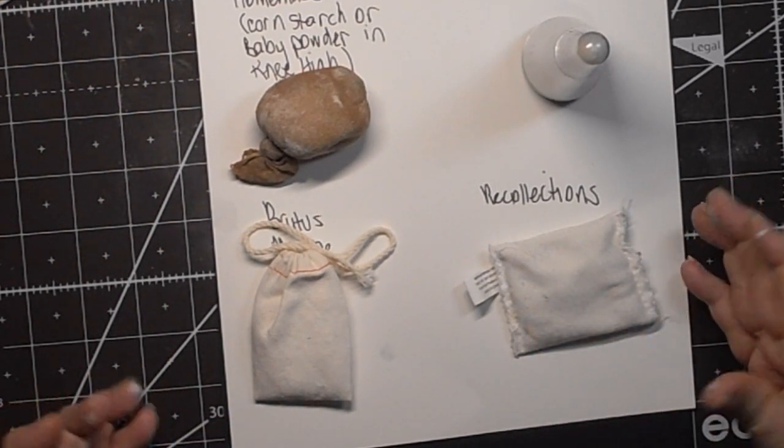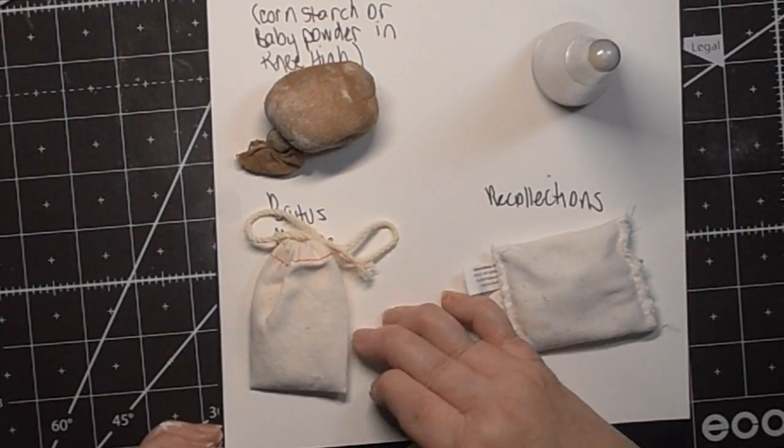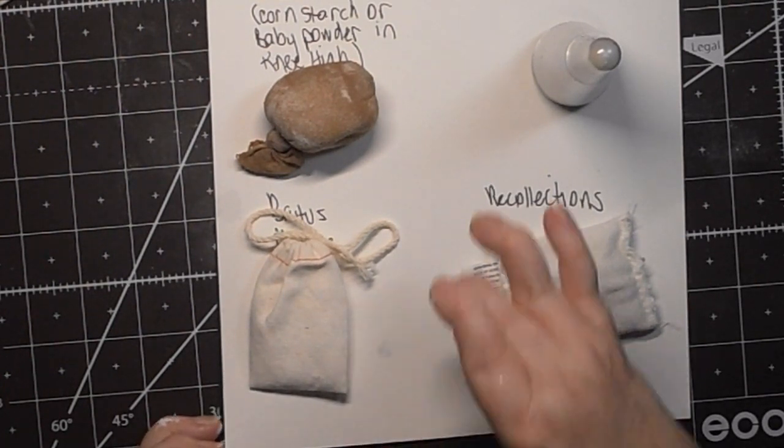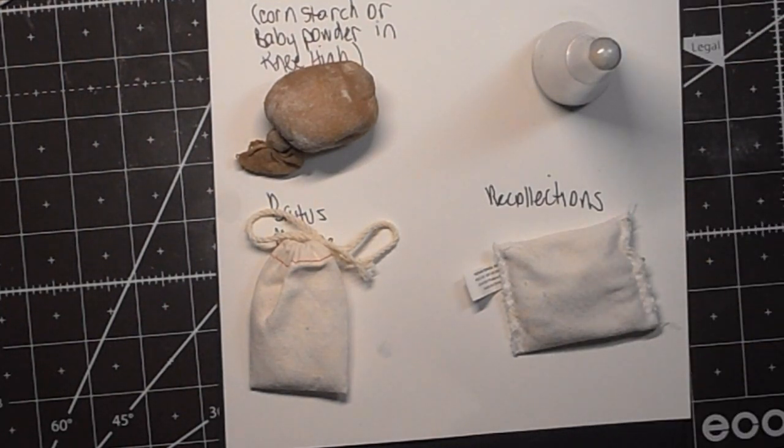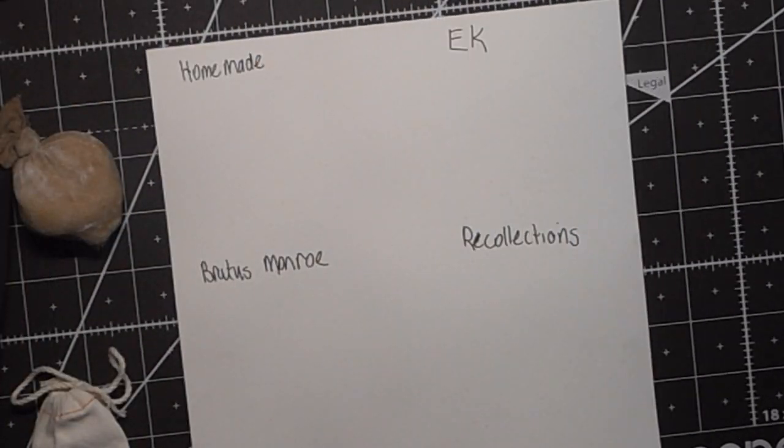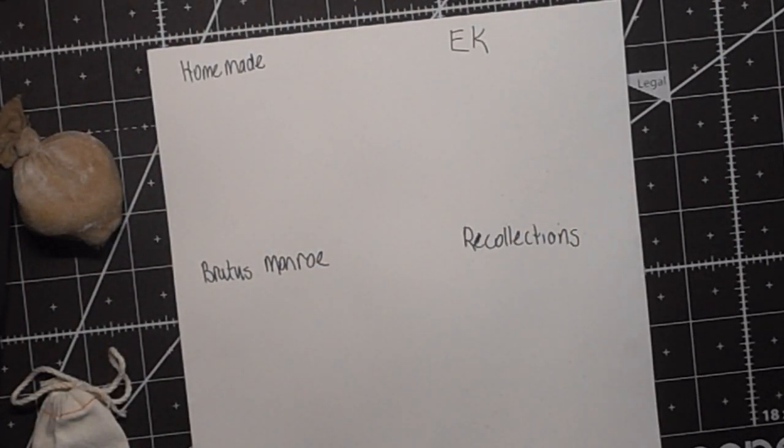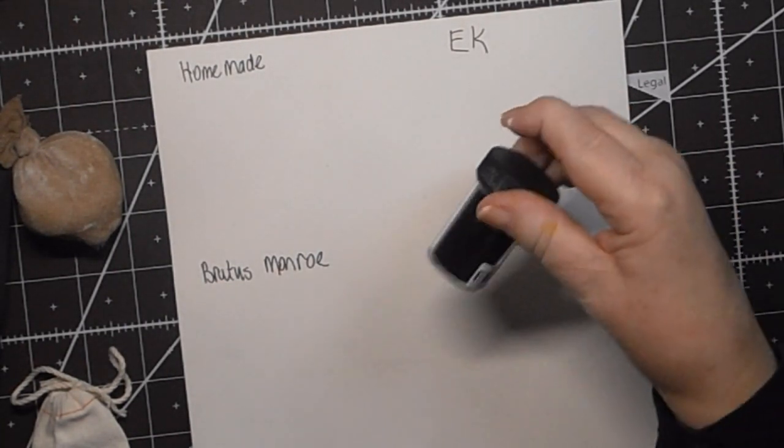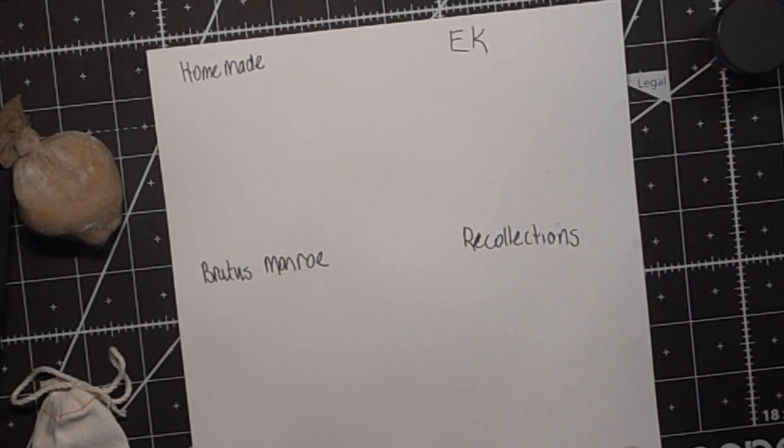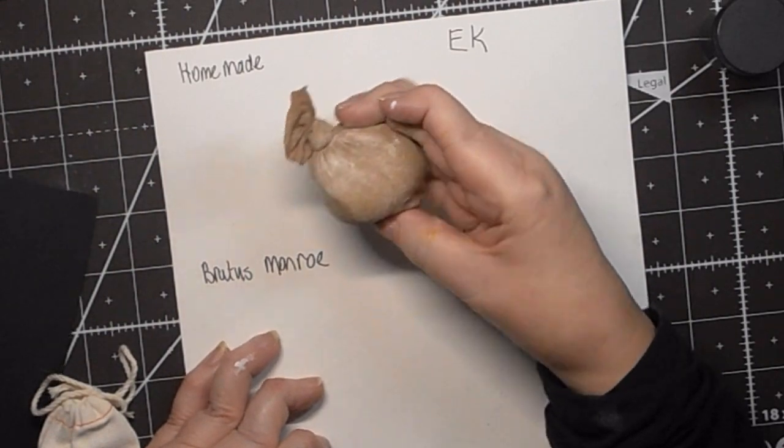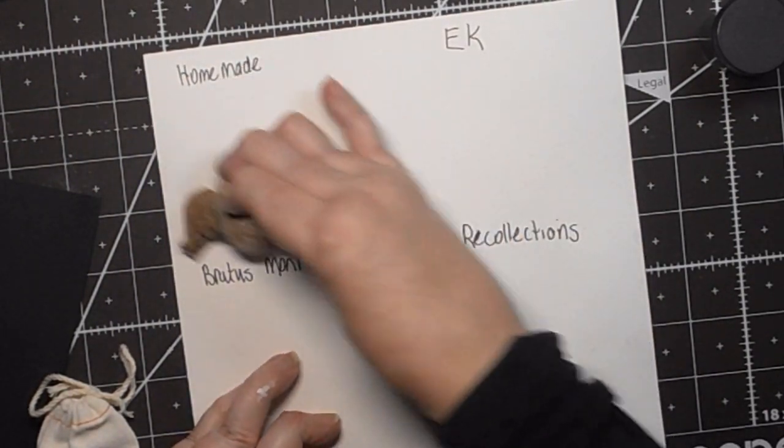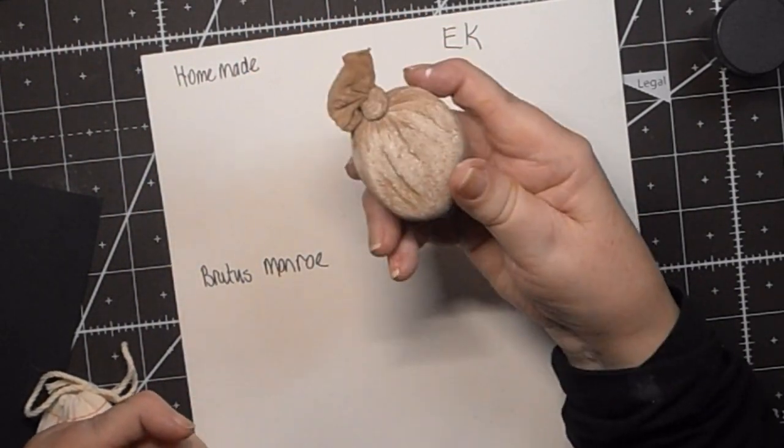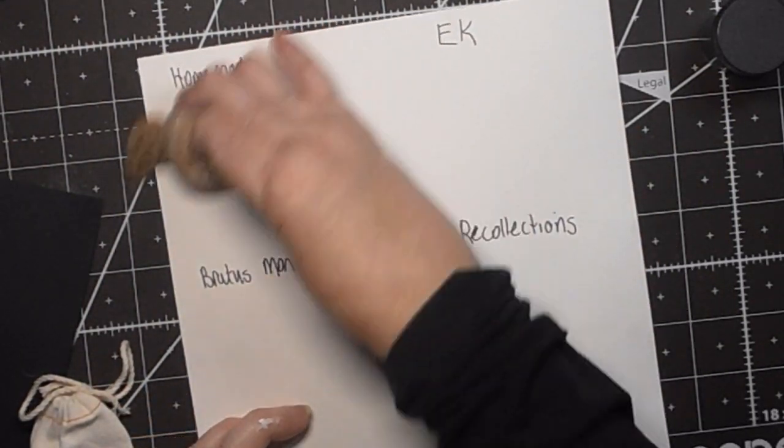I'm using Recollections 110 pound heavyweight cardstock for this project and I'm going to do it on white paper and black paper. Both are Recollections heavyweight. I thought what I would do is I would use the black on the white piece of paper. This is my homemade pouch that I made with cornstarch and I wrapped the cornstarch in doubled over knee high and then I knotted it and just tied it off. So it's just very simple.